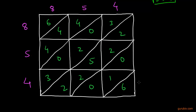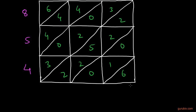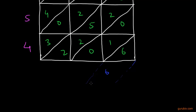Now we multiply 4 times 8 to get 32, 4 times 5 to get 20, and 4 times 4 to get 16. Starting to add the diagonals: in the lowest diagonal there is only 6, so the unit digit of the square of 854 is 6.